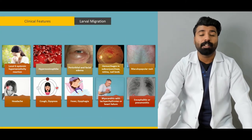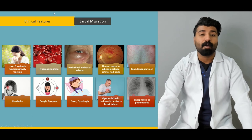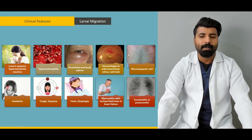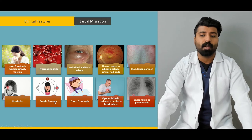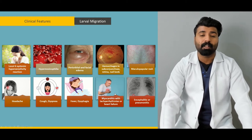Next, we're going to talk about the clinical features of larval migration. We'll cover what happens when larvae migrate to your blood, when larvae migrate to your eyes, when larvae migrate to your conjunctiva and retina, when it moves to your skin and what the skin manifestations are, when it goes to your head, when it goes to your lungs, and if it goes to your heart — what you will feel and what are the major cardiac symptoms that will come through.